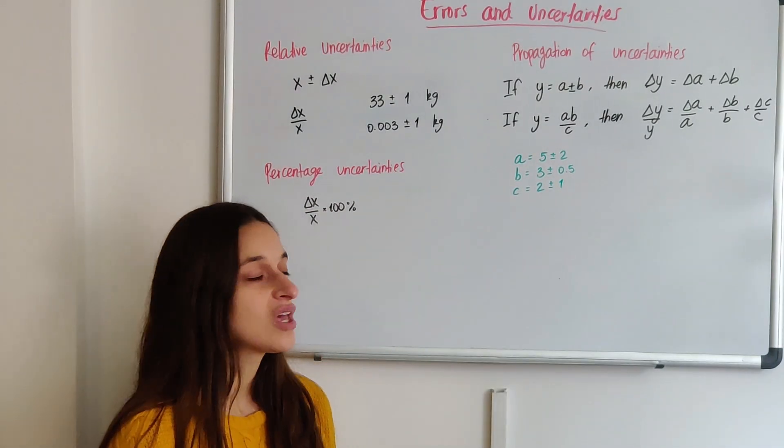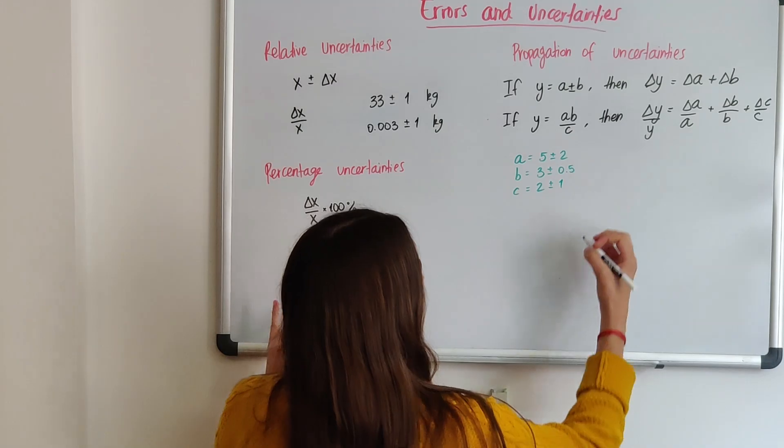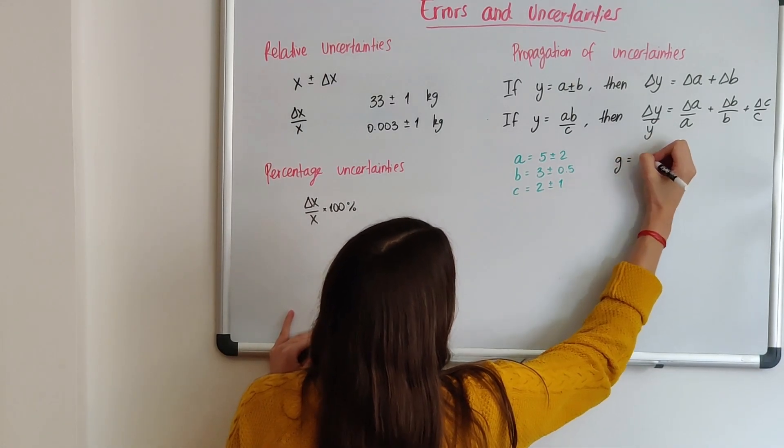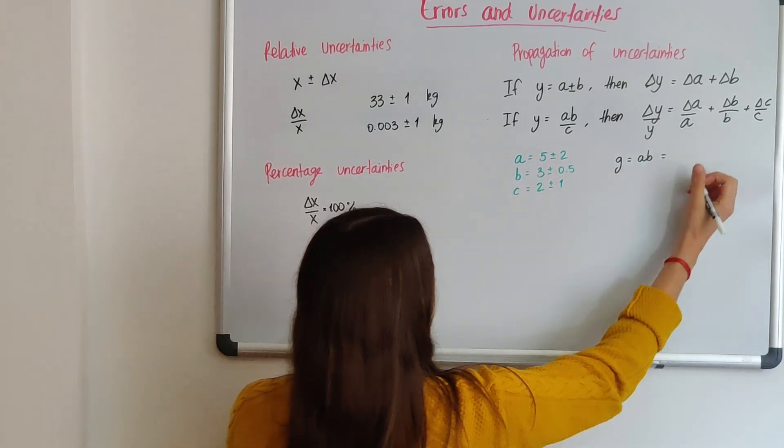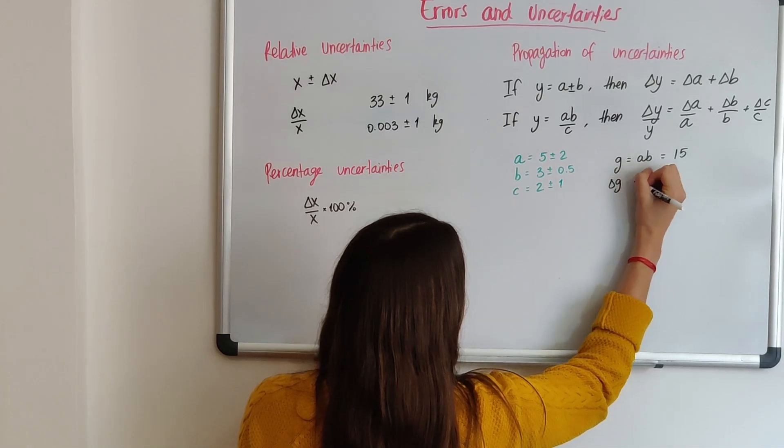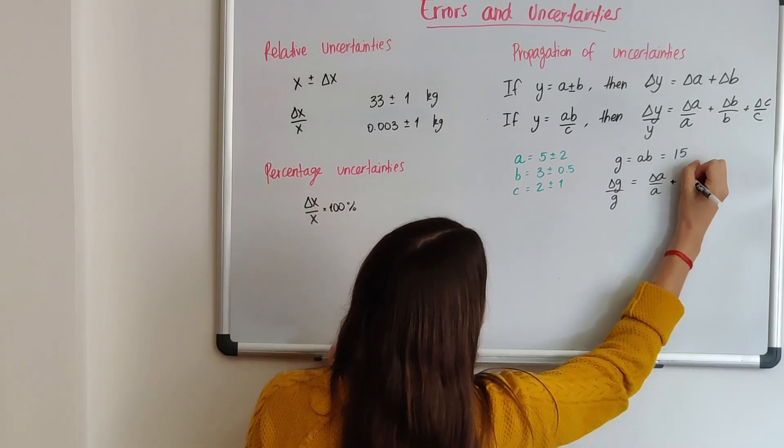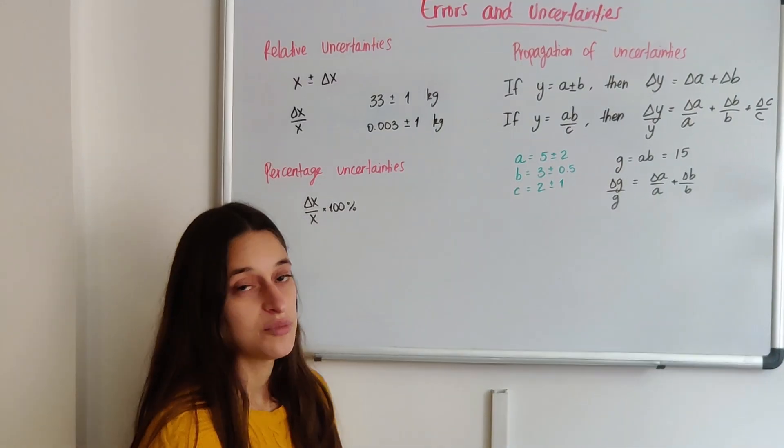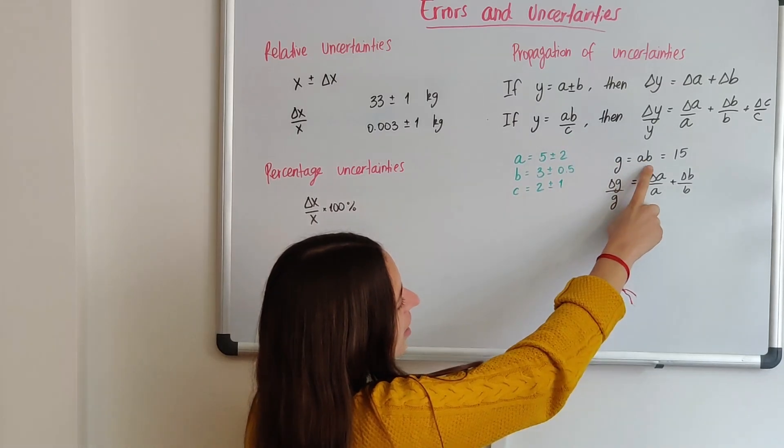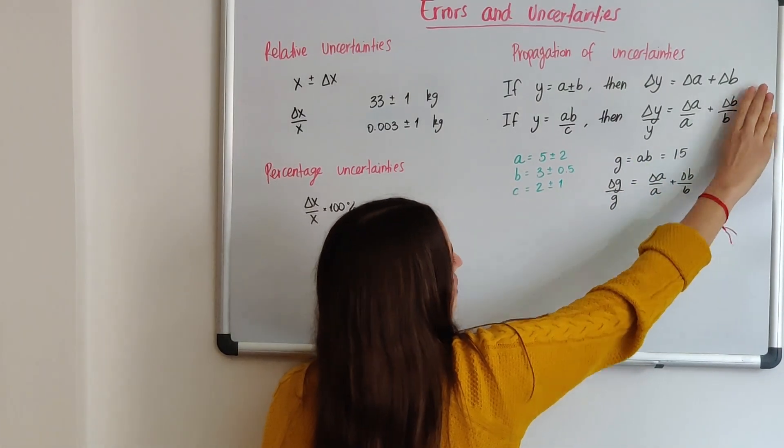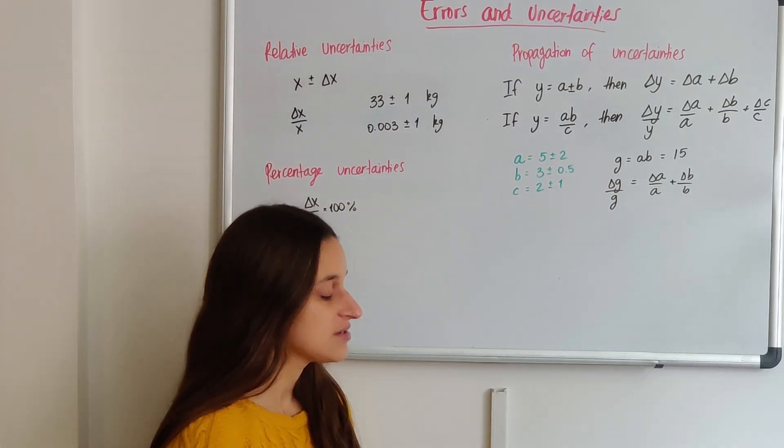Let's do an example. So those are our three values. And we want to know what another letter, let's say g, is. And g is just a times b. That means that g is 5 times 3, which is 15. But what's delta g? Delta g over g is equal to delta a over a plus delta b over b. Why am I ignoring c? Because in this case, c is 1. It has no uncertainty. So if I only have a and b multiplying, then I can just add their relative uncertainties.